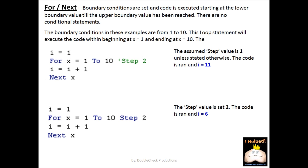The for-next loop is where we have boundary conditions set. We start off with a lower limit and an upper limit for our boundaries. Once there are no conditional statements, it's just going to run between those boundary conditions. For example, if we have a boundary condition of one to ten, our loop will execute the code beginning at one and ending at ten. Looking at our example: we start with X equals one to ten, and it's going to step through — one plus one equals two, two plus one equals three, and so on until we get to X equals ten. Our end value is going to come out to be eleven, defaulting by step of one.